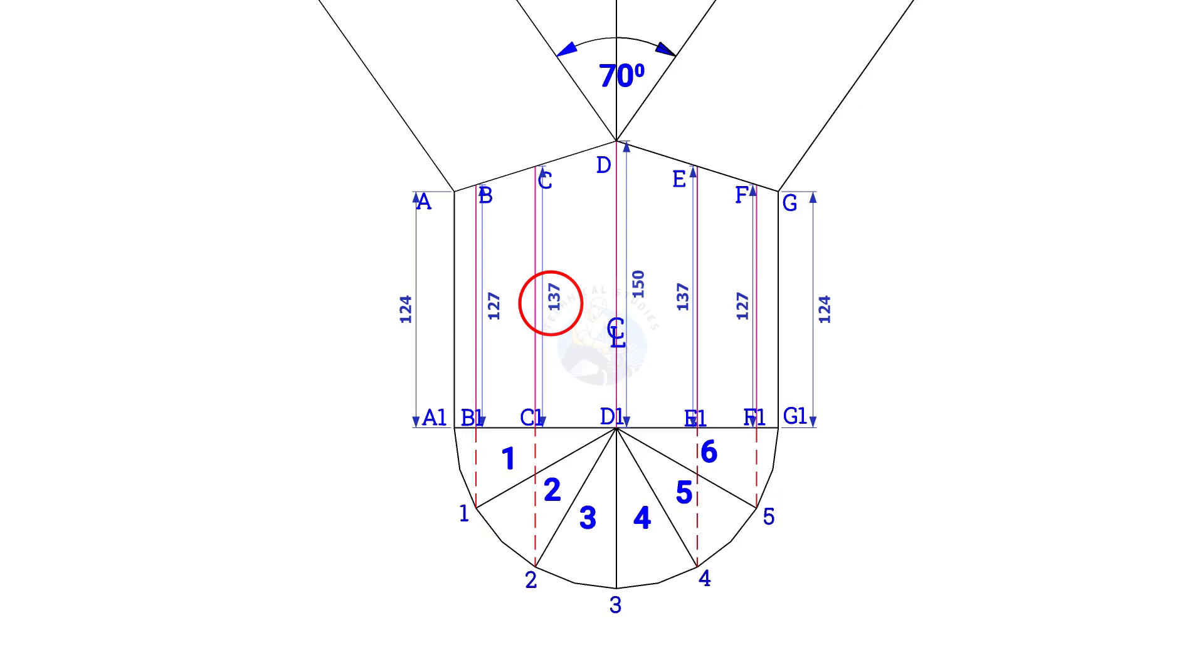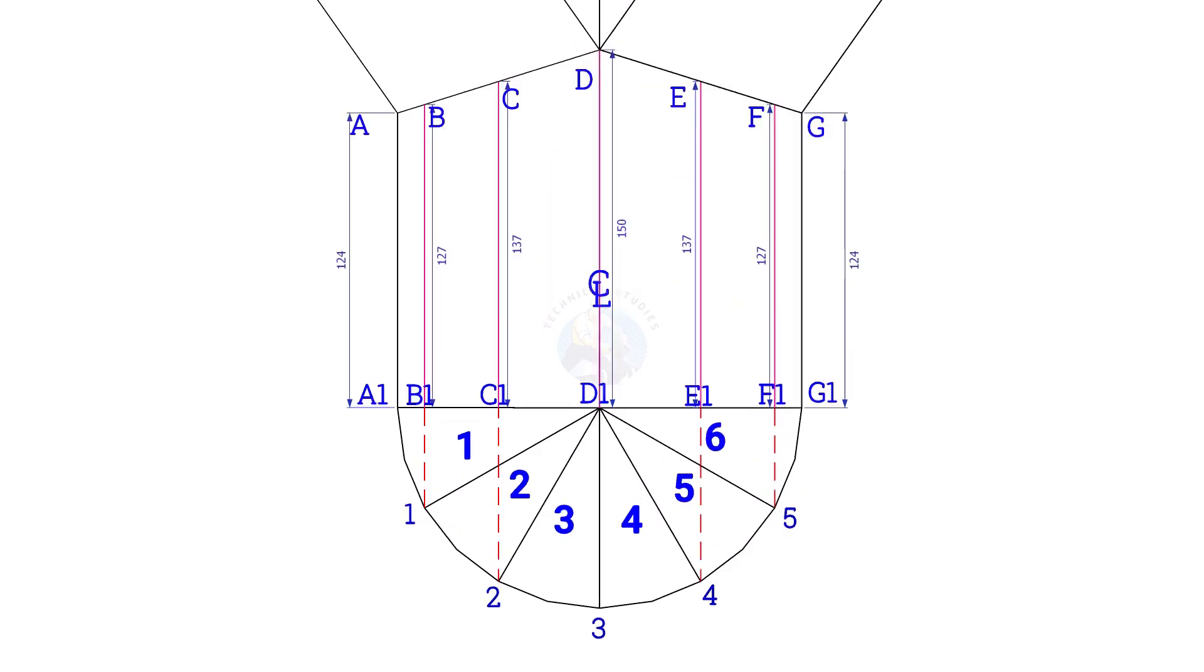Now calculate the circumference of the pipe. Multiply the pipe diameter by 3.14 or pi. Since the diameter of the pipe is 168, multiply it with 3.14.